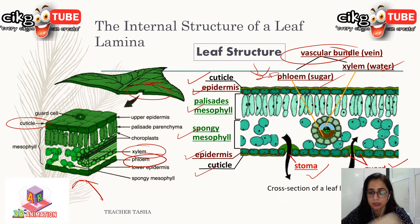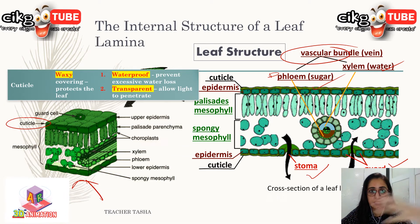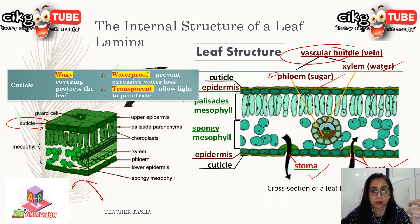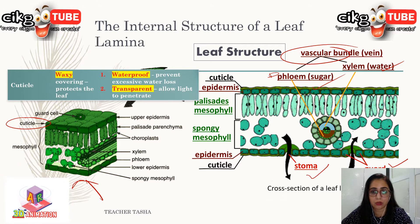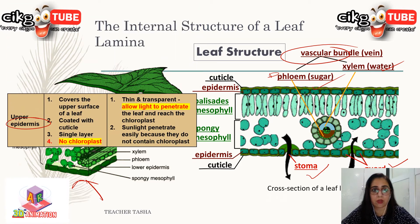The cuticle is a waxy covering that protects the leaf. It is also waterproof, which prevents excessive water loss by the plant. The cuticle has no color — it is transparent — and it allows light to penetrate into the leaf.